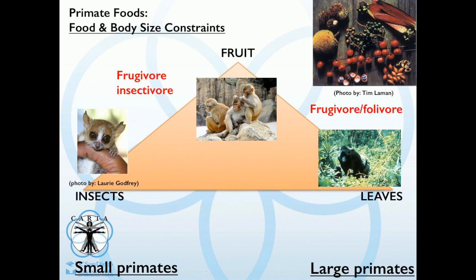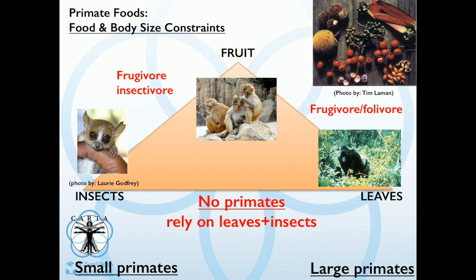When you try to figure out what our diet is, it doesn't fit at all. There are no primates that rely on leaves and insects. If you think about our diets, lettuce isn't going to give you much of anything because you don't have cellulase and you don't have a large microbiota to break it down. So we have a very different diet.